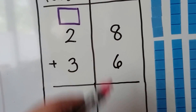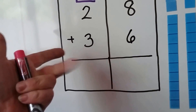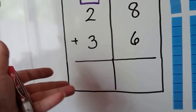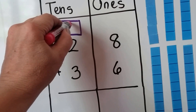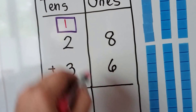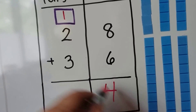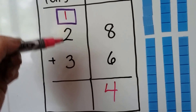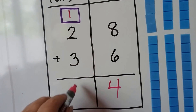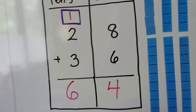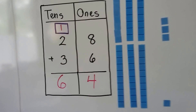Eight plus six is eight, nine, ten, eleven, twelve, thirteen, fourteen. We got a new ten and four ones. We add three, four, five, six — we get sixty-four, just like the models: six tens and four ones.